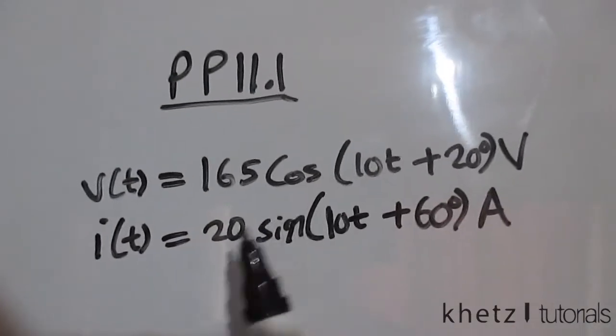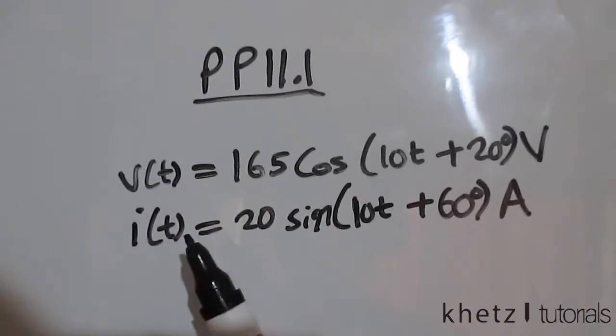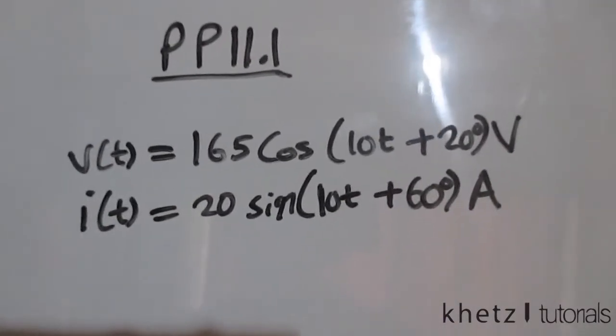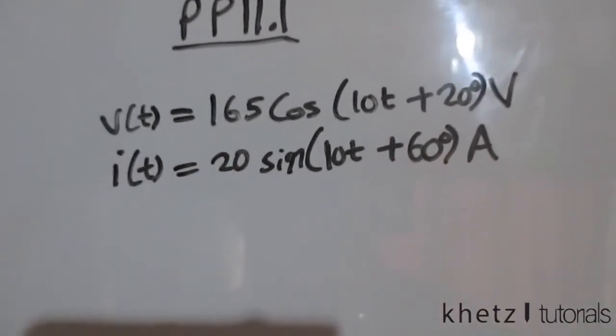We're given these two sinusoidal signals of voltage and current and we're asked to find the instantaneous power as well as the average power.